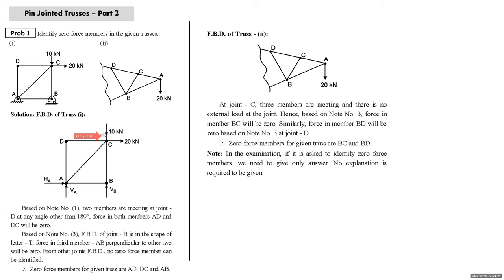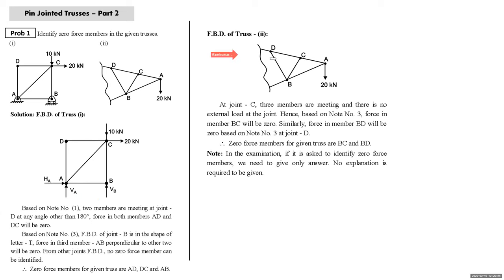At joint C, no conclusion can be drawn. At joint A, no conclusion can be drawn. At joint B, there is a reaction, but the FBD is in the shape of letter T. Two forces are along the vertical line and the third is perpendicular to it, so by Note Number Three, Fab is zero. So in this truss: CD and AD are zero (Note 1), and Fab is zero (Note 3).